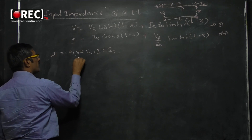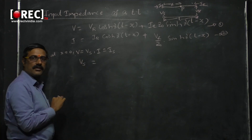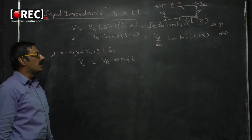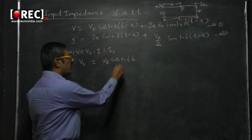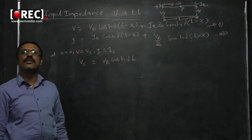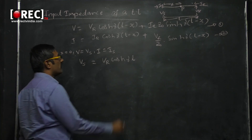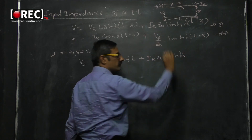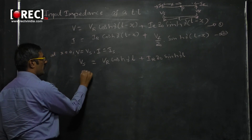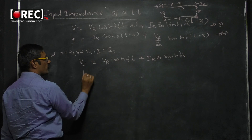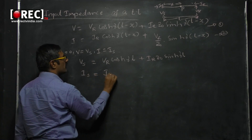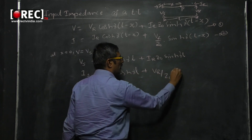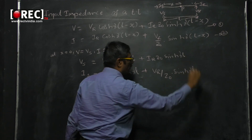Substituting these conditions: VS equals VR cosh(γl) plus IR·Z₀ sinh(γl), because l−x becomes simply l when x equals zero. Next, IS equals IR cosh(γl) plus VR/Z₀ sinh(γl).